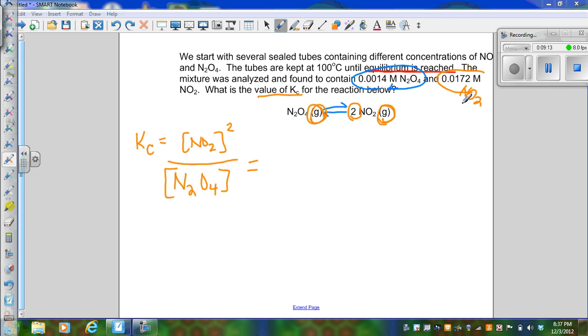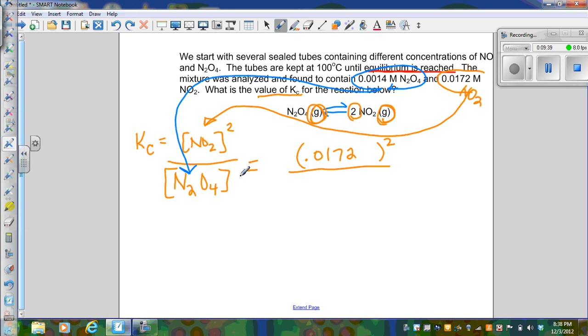Let's take our NO2 and we're going to substitute that into the numerator: 0.0172 molar, and that is going to be squared. I'm ignoring units because we don't include them for equilibrium constants. My N2O4 is 0.0014. I squared my NO2 because of the fact that it was squared in the expression. Then what I'm going to do is solve. I'm going to take 0.0172 and square that, divide that by 0.0014. I can use two significant figures, and when I do that I get 0.21 with no units.